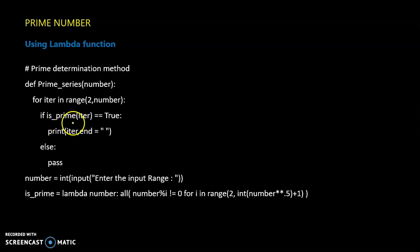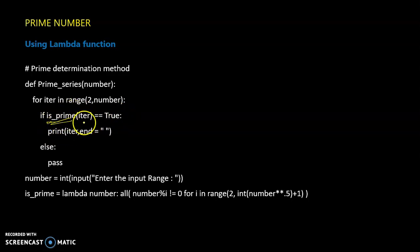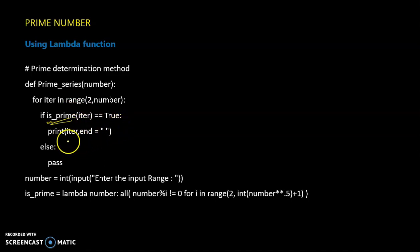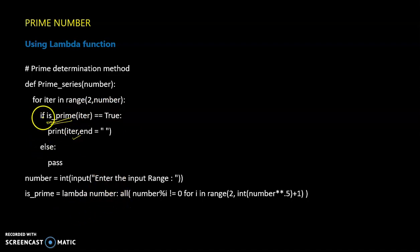Next, we define an 'is_prime' function using a lambda function. If we pass an argument and it returns a true value, we will print that value. We will check it as a prime number using the lambda function.